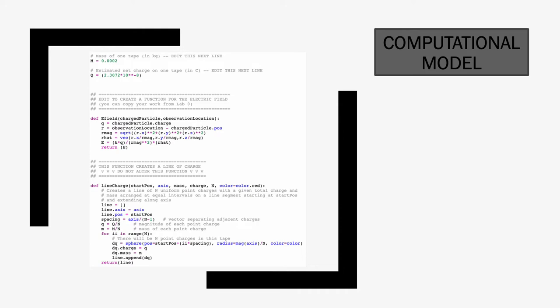Using the value of Q found in the last slide, I was able to create a function that calculated the electric field and electric force at a point on the line of charge for tape B. Shown on the slide is a function for the electric field and a function that creates n charges in a given line for tape A and B.